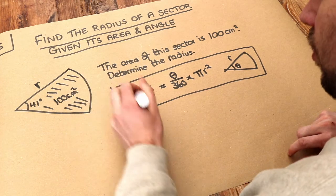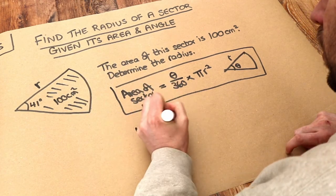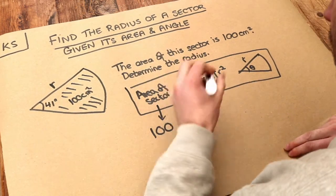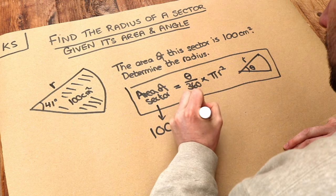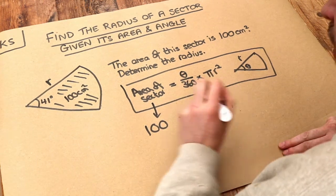Well, we know the area of the sector is 100, so let's substitute that in as 100 equals theta over 360, where we know the theta here is that angle at the center of the circle, 41, and we're timesing it by pi times the radius squared, which we don't yet know.